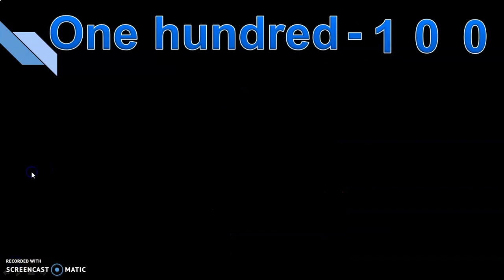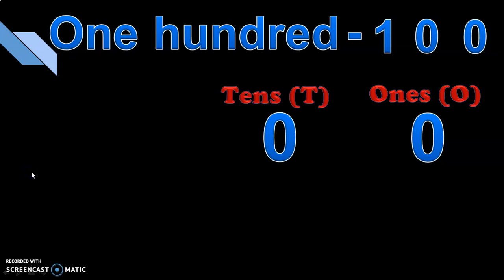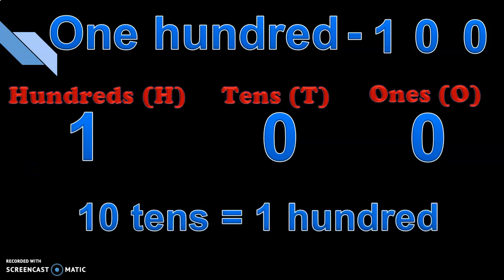Now let us move on to a three-digit number. One hundred, or 100, is the smallest three-digit number. Here the ones place is zero, the tens place is zero, and the number one is in the new place value called the hundreds place. Based on place values: seven tens means 70, eight tens means 80, nine tens means 90 — so what is ten tens? Ten tens means one hundred.